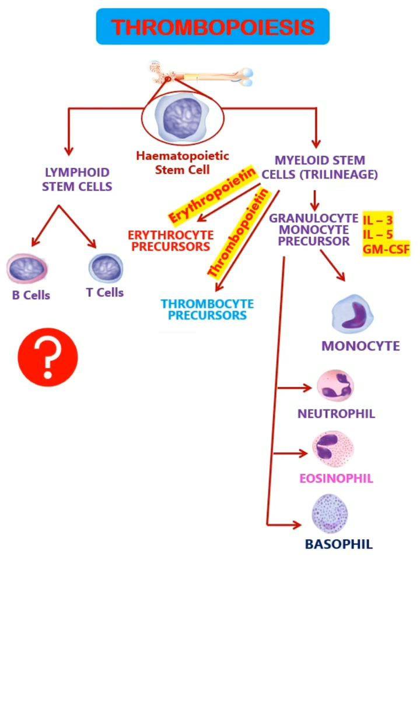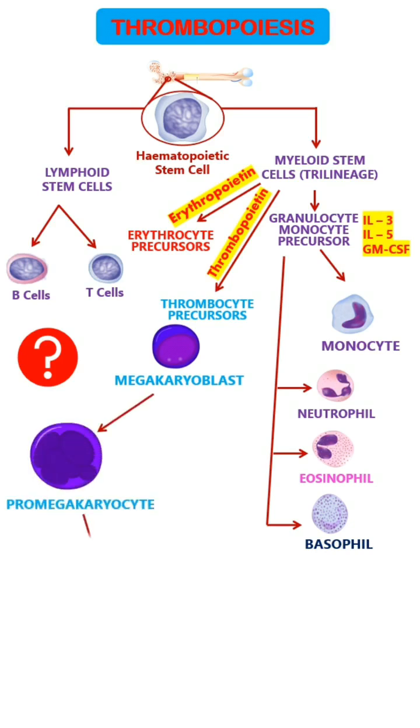The earliest precursor of platelets in the bone marrow is the megakaryoblast. A megakaryoblast replicates its nuclear chromatin and forms a promegakaryocyte. Then the promegakaryocyte forms a megakaryocyte.